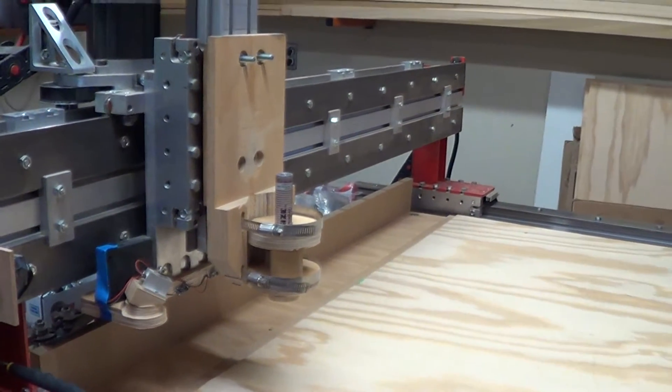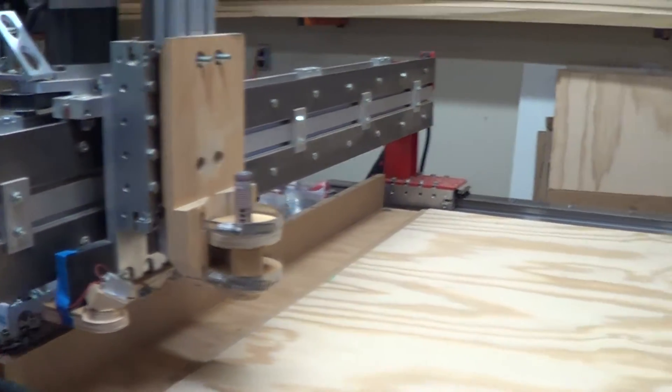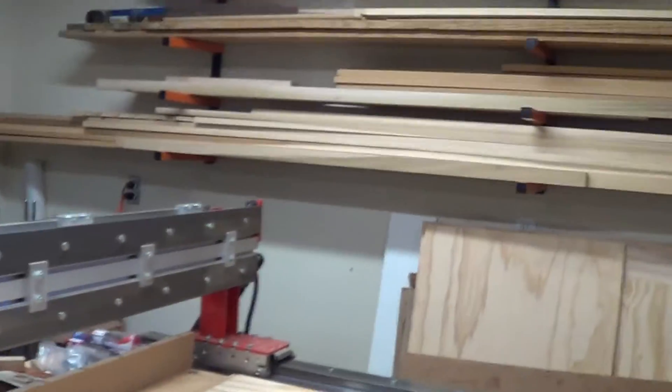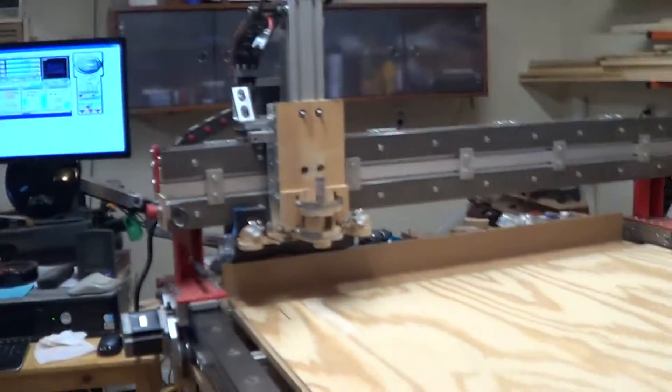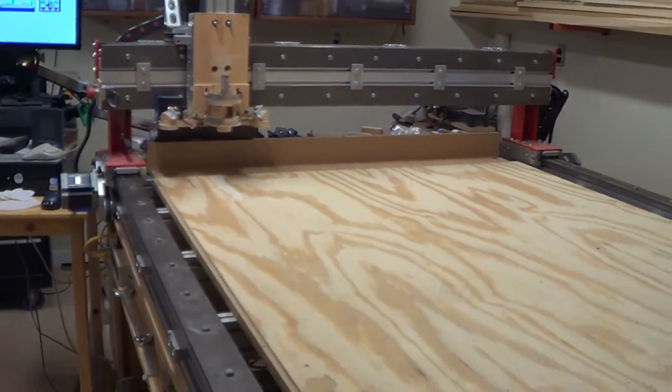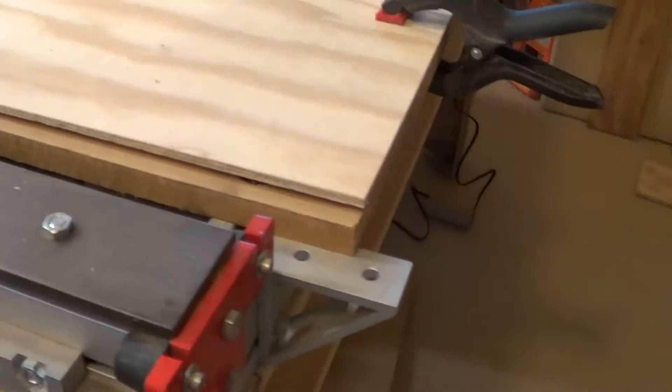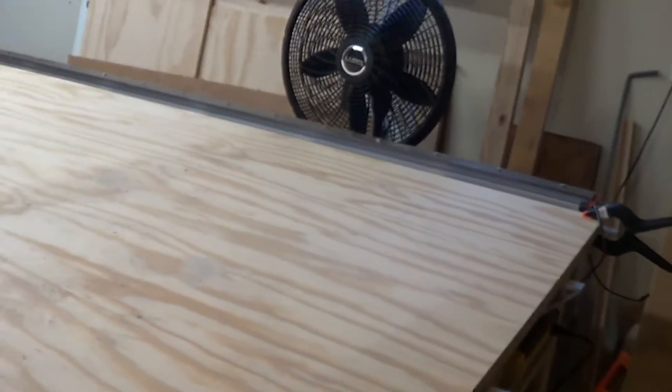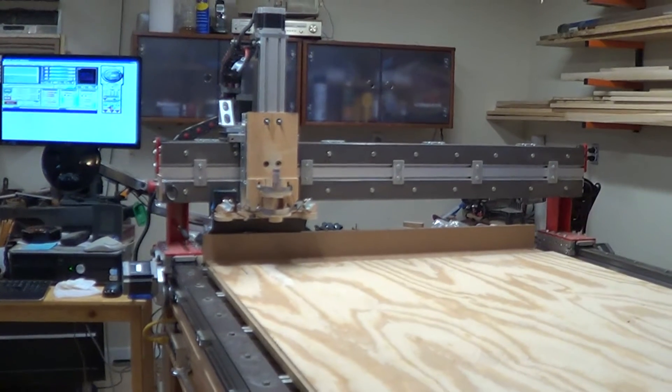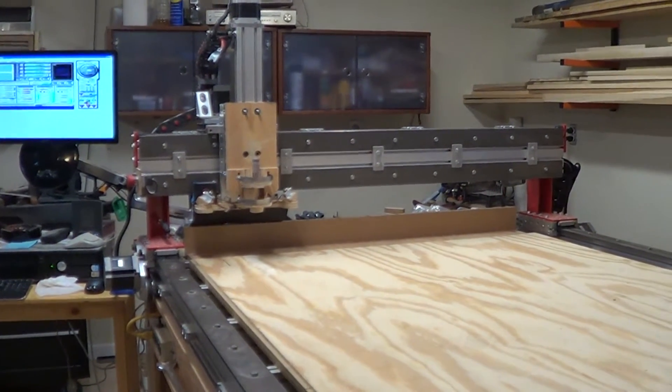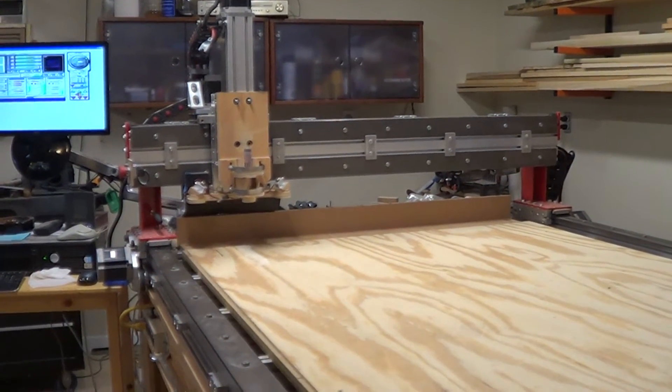I'm going to set the machine up to do the drawing. First thing we've got to do is tell the machine where our origin is and that's going to be this corner of the plywood. So what I'm going to do is I'm going to bring the axes up here and we'll set the zeros and we'll begin.